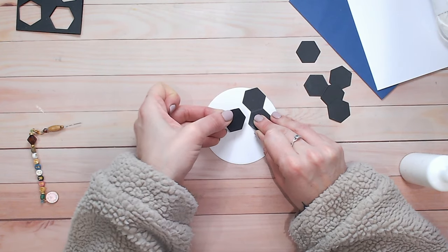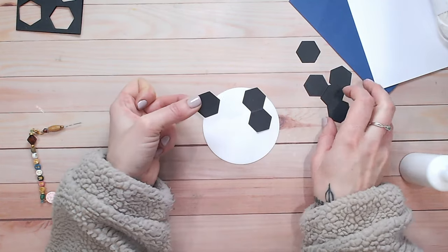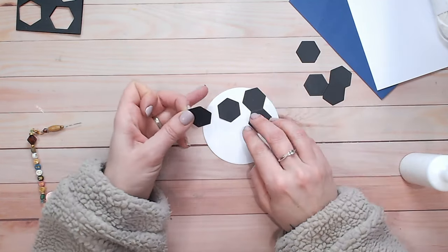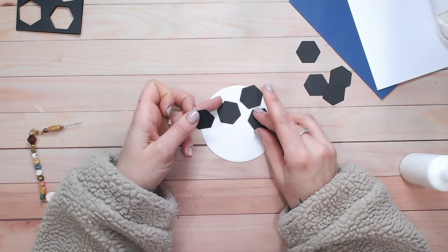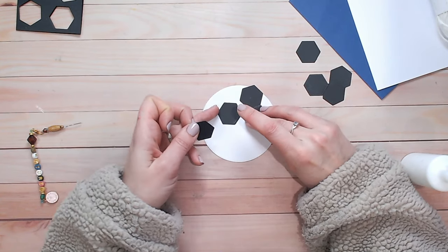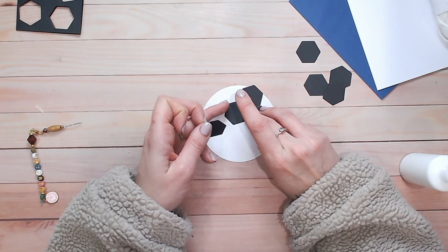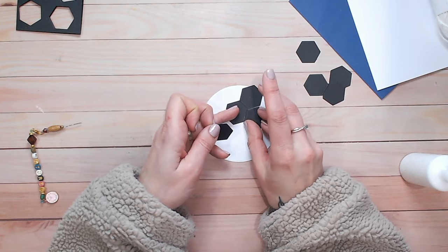I'm kind of using the spare hexagons here without any glue on to position because you want one black hexagon and then all white ones around it so the first couple are a little bit harder to place. So I'm just placing dry ones here so I can work out where to put the next one with glue on.